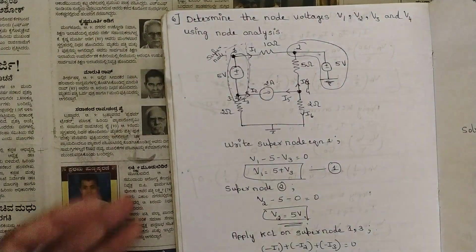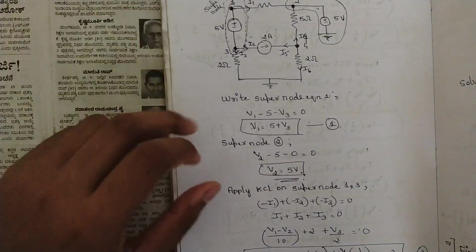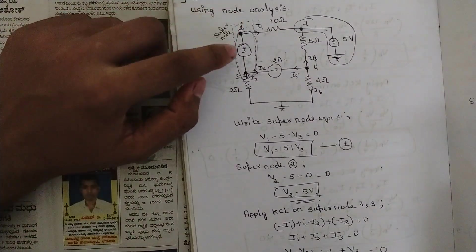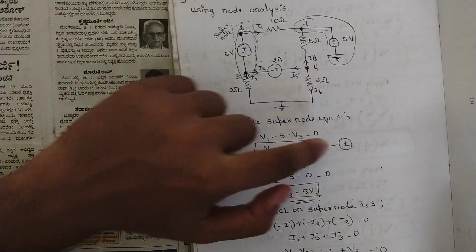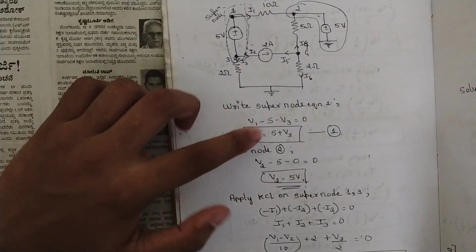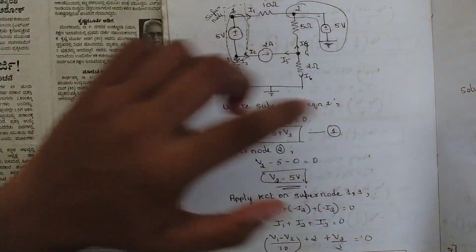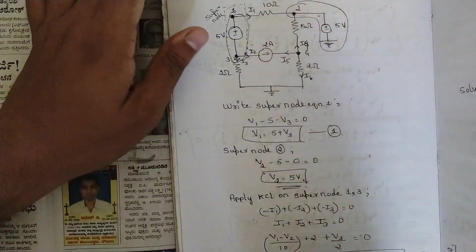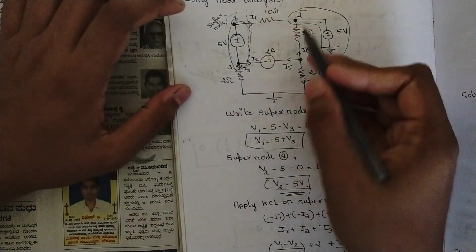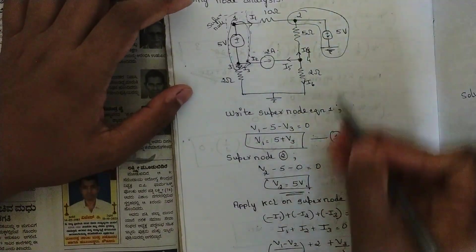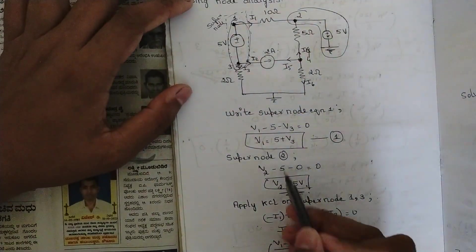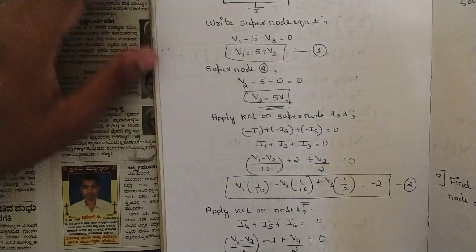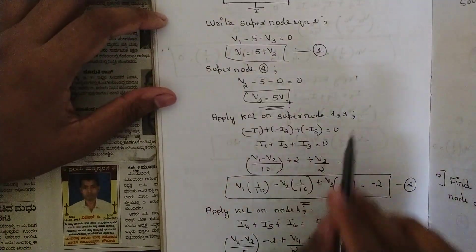Write the super node equations first. Equation 1: V1 - 5 - V3 = 0, so V1 = 5 + V3. For the second super node: V2 - 5 - 0 = 0, giving V2 = 5 volts. Then apply KCL on super node 1 and 3.